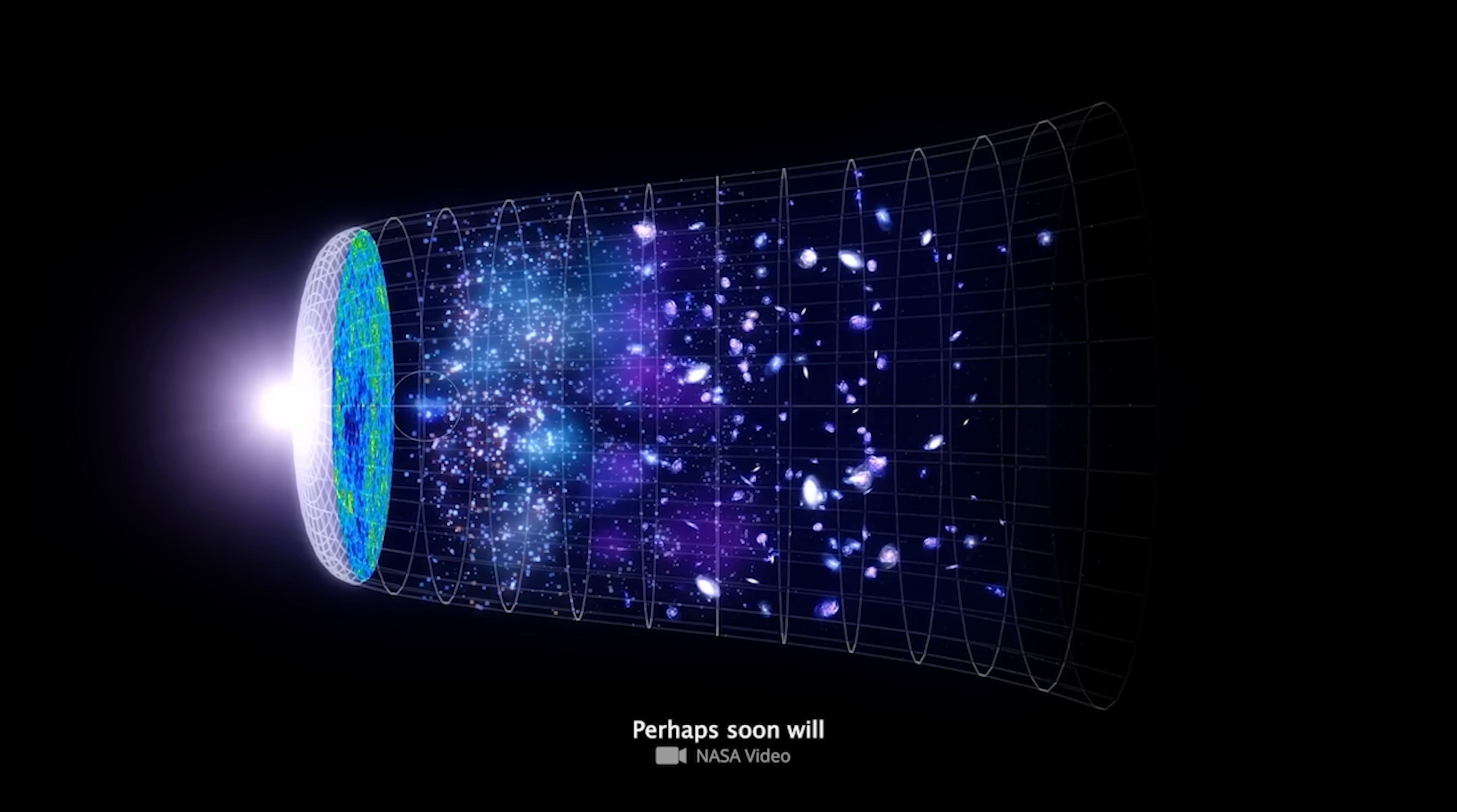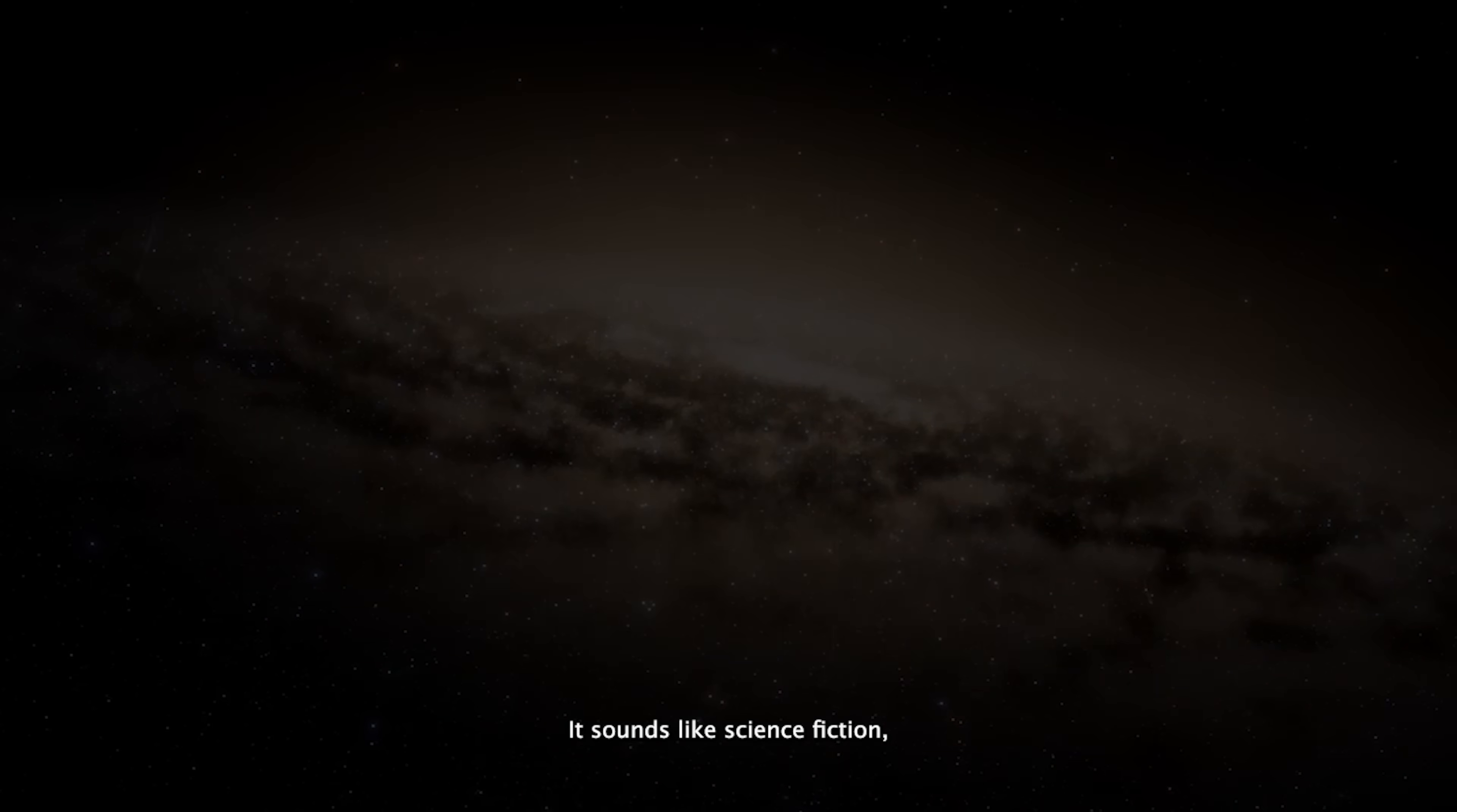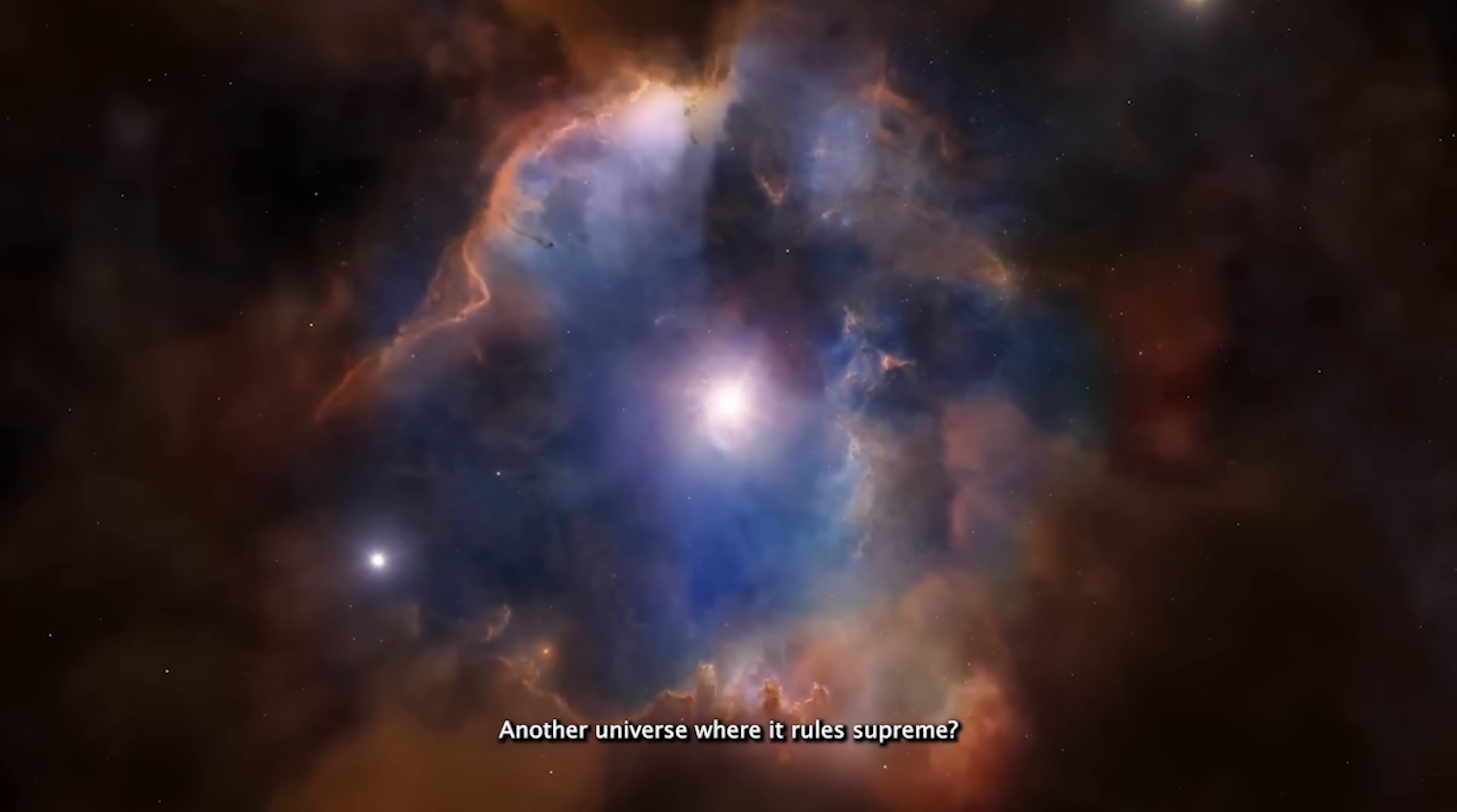Perhaps soon we'll finally understand how the Big Bang's perfect balance tipped just enough to create everything: galaxies, stars, planets, and life itself. But what if our universe isn't alone? What if somewhere out there in a hidden corner of reality, antimatter dominates instead of matter? It sounds like science fiction, but this is the frontier of modern theoretical physics. If the Big Bang really did produce equal parts matter and antimatter, then the question haunts us: where did all the antimatter go? Did it vanish, or could it have slipped away to somewhere else, another universe where it rules supreme?